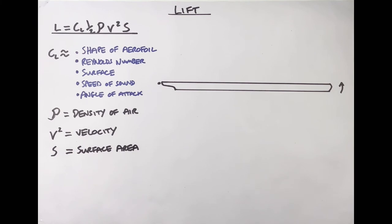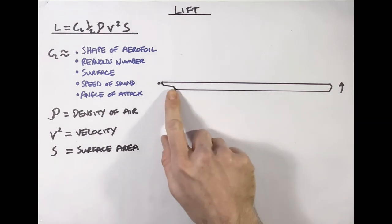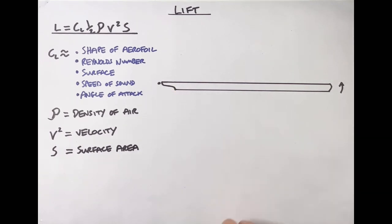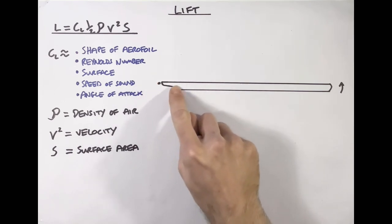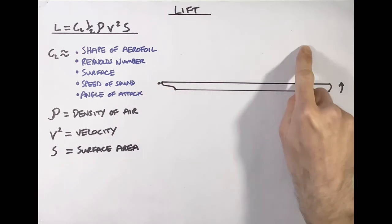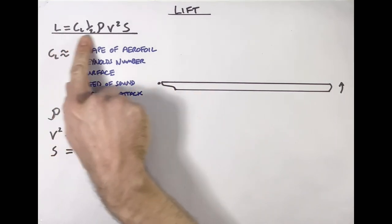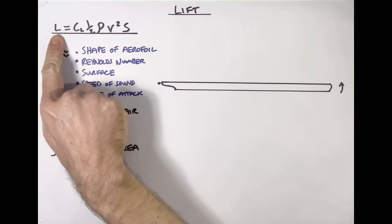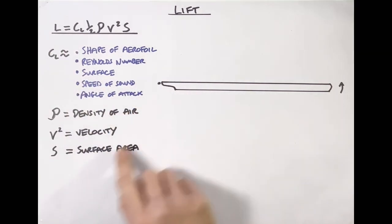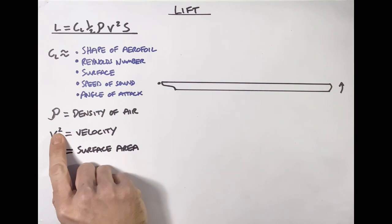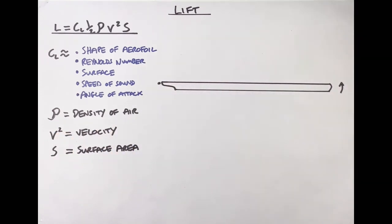That's how the lift equation breaks down, but importantly we need to understand the lift distribution on a rotor blade as opposed to an aeroplane, and what we can do to affect it. Unlike an aeroplane, this blade is rotating. At the root it's travelling a much shorter distance than at the tip, so the relative speed at the tip is much higher. This means we get much higher lift at the tip, and because velocity is squared in the equation, there's an exponential increase in lift towards the tip.